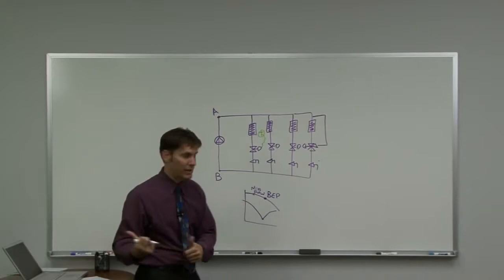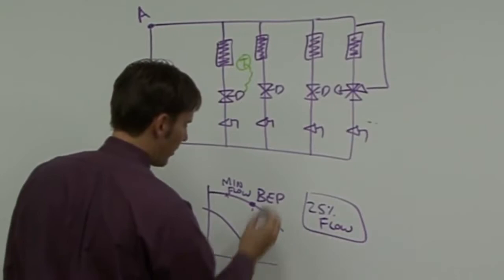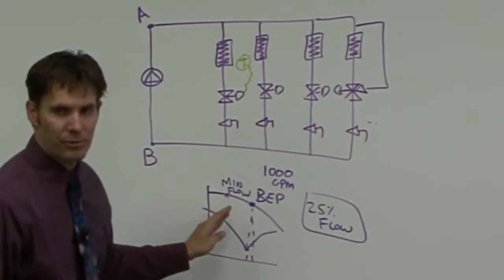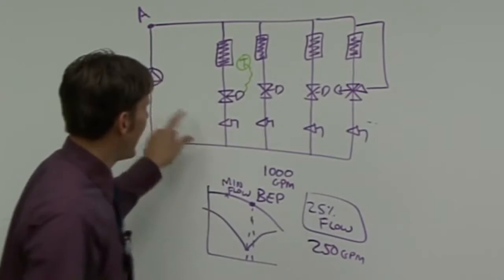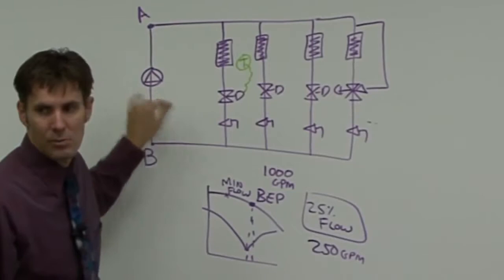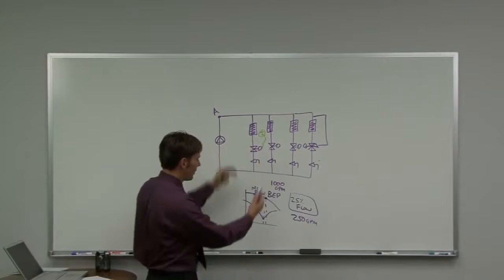If a manufacturer does not give you the minimum flow rate, the Patterson selection software does. A safe rule of thumb is about 25% of your best efficiency flow. So if your best efficiency flow is 1000 GPM and no minimum is specified, assume about 250 GPM. You'll need enough bypass so that you can keep that flow going and not damage your pump. When we apply a VFD to the pump, the rules start to change — as the VFD slows everything down, we don't have to satisfy this minimum flow requirement in the same way, and we'll talk about that later.